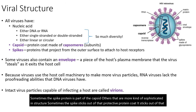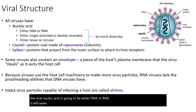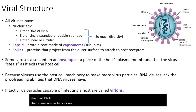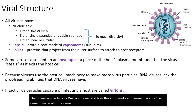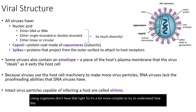I want to talk about the nucleic acid that a virus may have. The viral nucleic acid is going to be either DNA or RNA — it will never have both. But there's a lot of diversity here. Some viruses have double-stranded DNA, which is very similar to ours. But some viruses have a single-stranded DNA molecule, which is kind of unusual since living organisms don't have that.